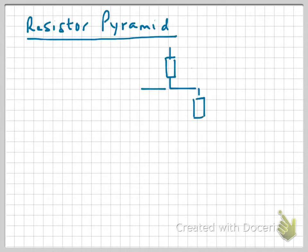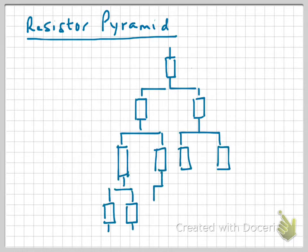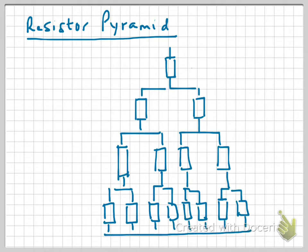If we were to construct a pyramid using a number of resistors, like so, where the value of each resistor is the same, let's call it R.